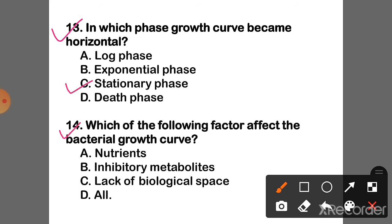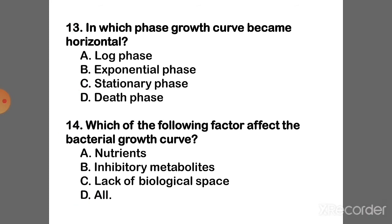Question 14: Which of the following factors affect bacterial growth? The correct answer is Option D — All: nutrients, inhibitory metabolites, and lack of biological space are the factors which affect bacterial growth.